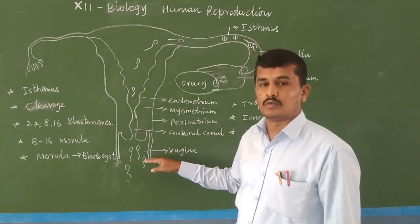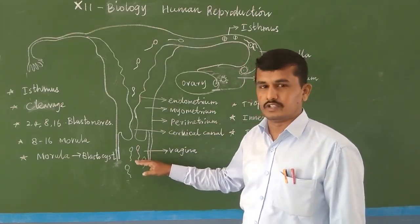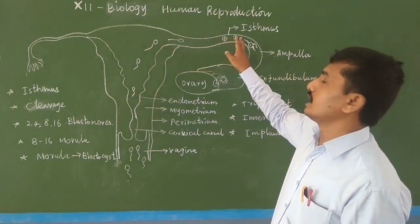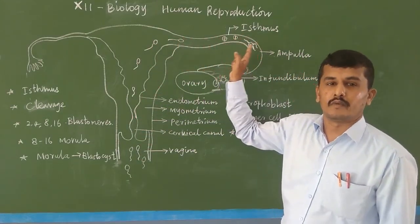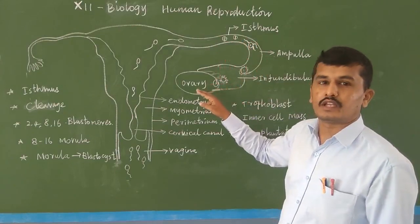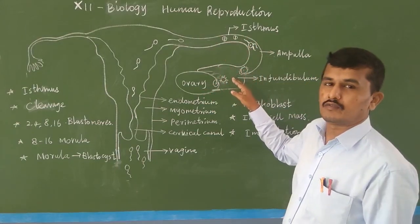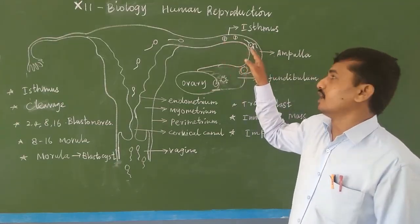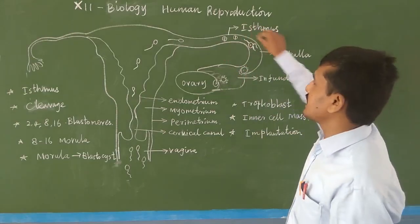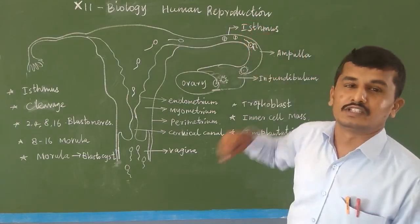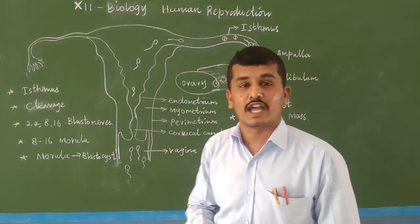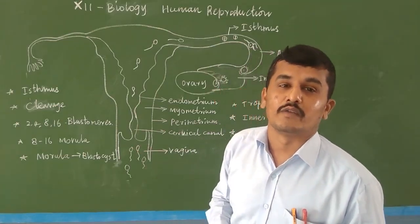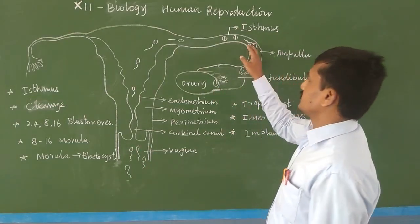The spermatozoon enters through the vagina, through the cervical canal, through the uterus, and slowly moves into the ampullary-isthmic region of the oviduct. At the same time, the ovary releases the ovum, which moves into the infundibulum, then the ampullary region, and then the isthmic region of the oviduct. Fertilization exactly takes place at the ampullary-isthmic junction of the oviduct or fallopian tube.